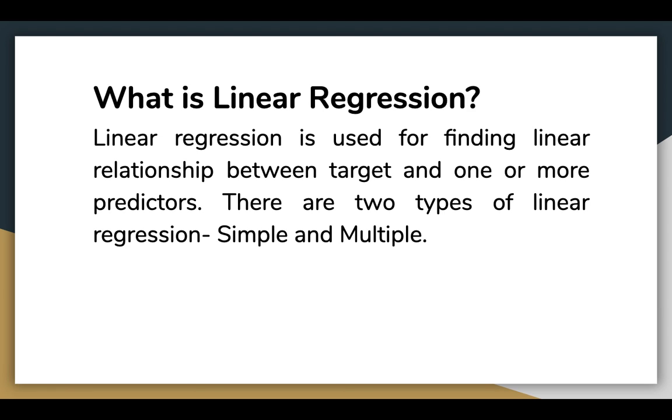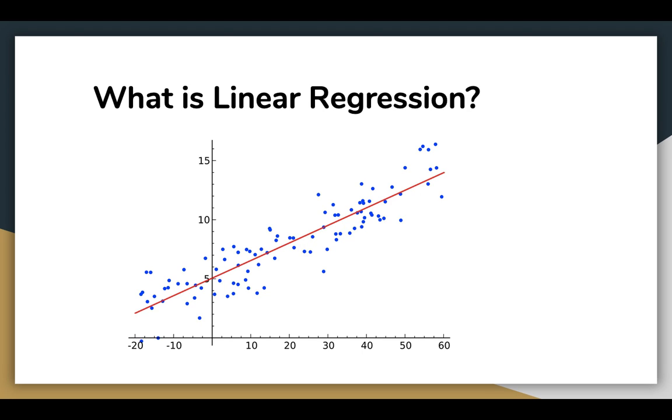So what is linear regression? By definition, it is used for finding a linear relationship between the target and one or more predictors. The idea behind linear regression is to fit the observations of two variables into a linear relationship between them. In simple terms, the task is to draw the line that is best fitting or closest to the points where the XY coordinates are observations of the two variables which are expected to depend linearly on each other.